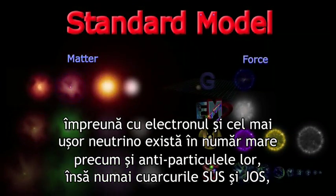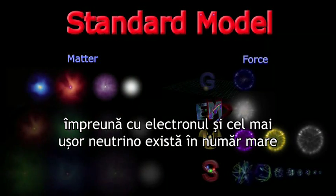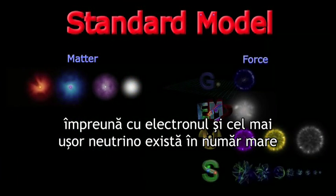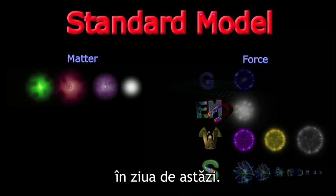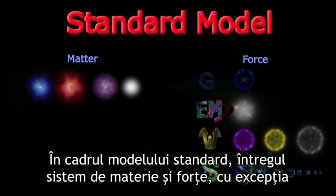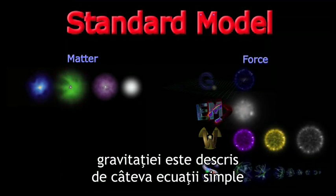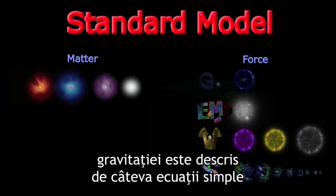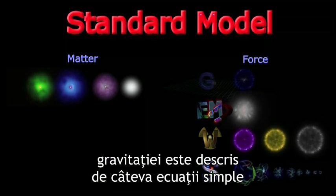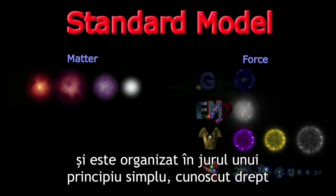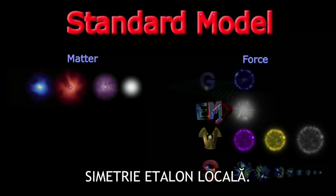But only the up and down quarks, the electron, and the lightest neutrino are populous today. In this standard model, the entire system of matter and forces — except gravity — is encapsulated in a few simple equations and is organized around one core principle known as local gauge symmetry.